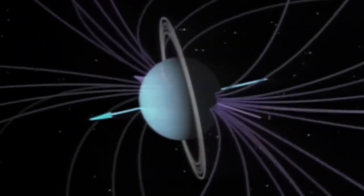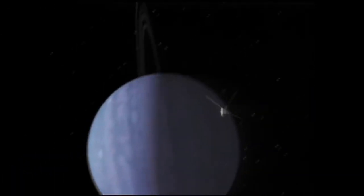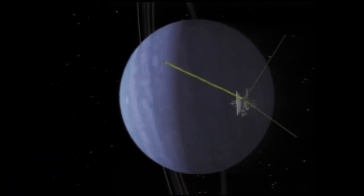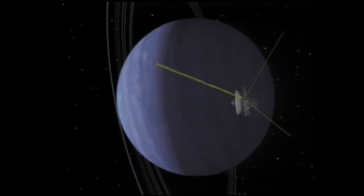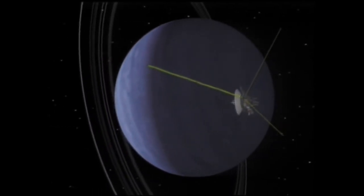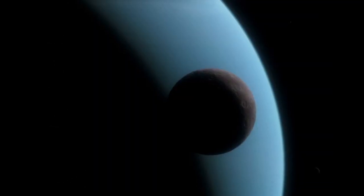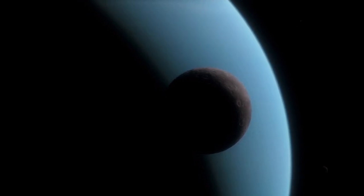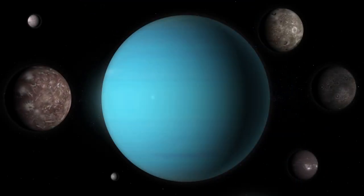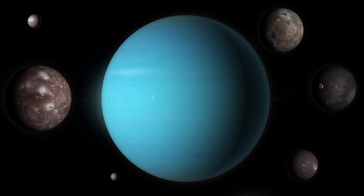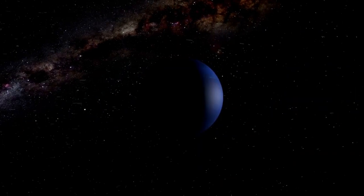Uranus is also one of just two planets that rotate in the opposite direction than most of the planets. Venus is the other one, from east to west. Uranus has 27 known moons. While most of the satellites orbiting other planets take their names from Greek or Roman mythology, Uranus's moons are unique in being named for characters from the works of William Shakespeare and Alexander Pope. All of Uranus's inner moons appear to be roughly half water ice and half rock.